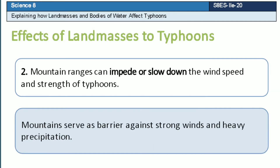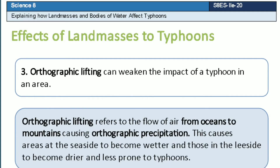Second, mountain ranges can impede or slow down the wind speed and strength of typhoons. Mountains serve as a barrier against strong winds and heavy precipitation. Orthographic lifting can weaken the impact of the typhoon in an area. Orthographic lifting refers to the flow of air from oceans to mountains causing orthographic precipitation. This causes areas at the seaside to become wetter, and those in the leaside to become drier and less prone to typhoons.